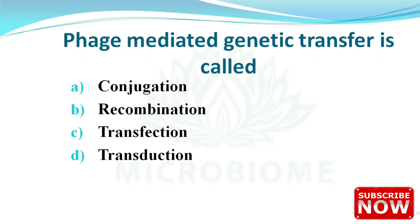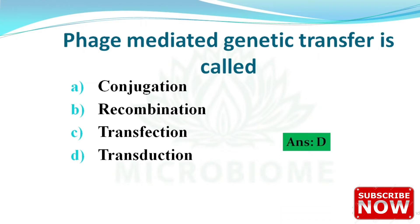Next: phage-mediated genetic transfer is called what? The options are conjugation, recombination, transfection, and transduction. The right answer is option D — transduction. Transduction is of two types: generalized transduction and specialized transduction.